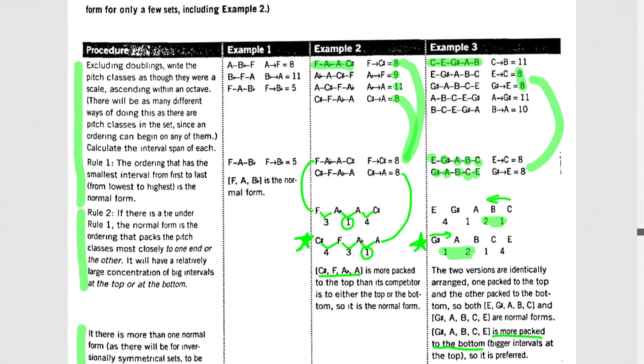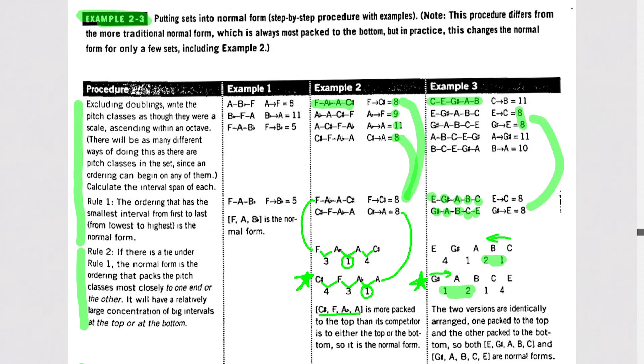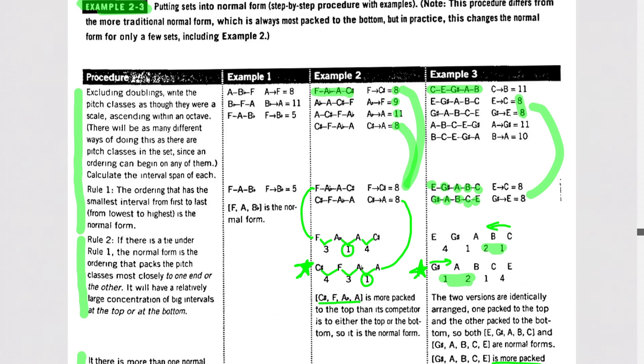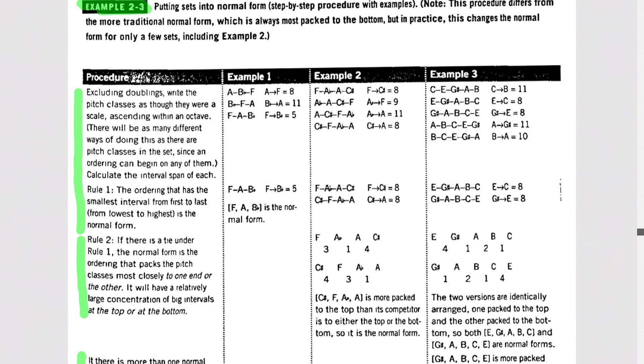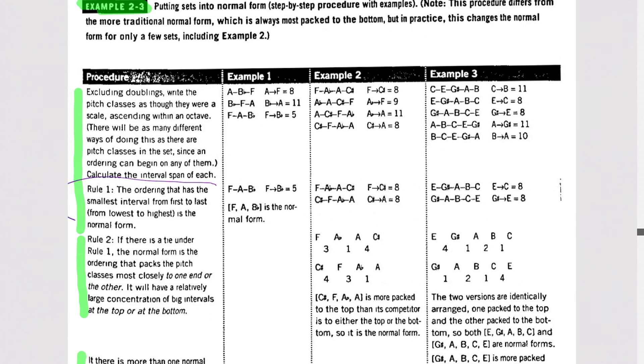So, again, everything you need to know is encapsulated in example 2-3. I don't want you to get too stressed out about this more closely packed to the top or bottom thing just yet. Mostly, what you need to remember is rule 1. The ordering that has the smallest interval from first to last, from lowest to highest, is the normal form. So, this is your big takeaway from this video. This is what you need to do your homework. And then if you find yourself in a sticky situation, flip back to page 45 and remind yourself what rule 2 is to break the ties. Happy normal forming!